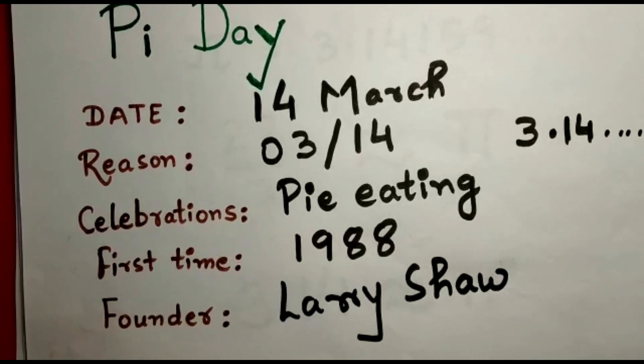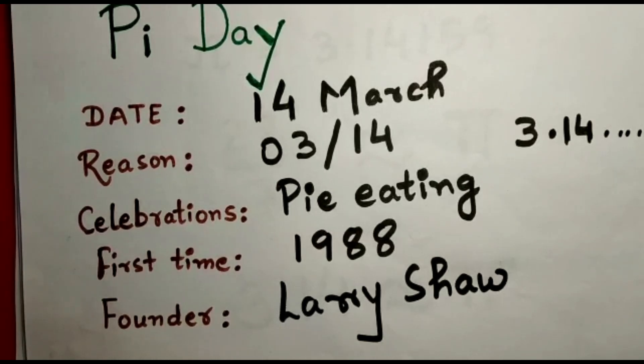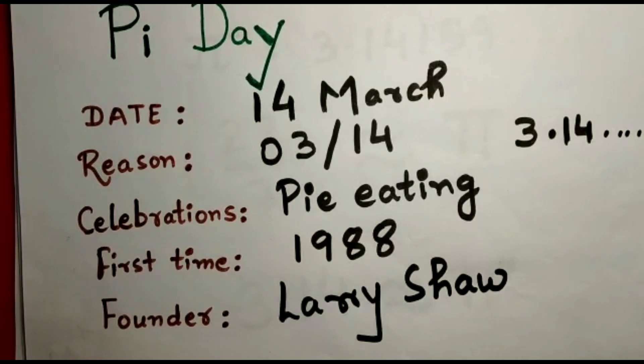The date is 14th of March. The reason is when you write it in this format - month and date - 03 is March, the third month, and 14 is the date, so 03/14. You know the value of Pi is 3.14..., so it's matching, right?